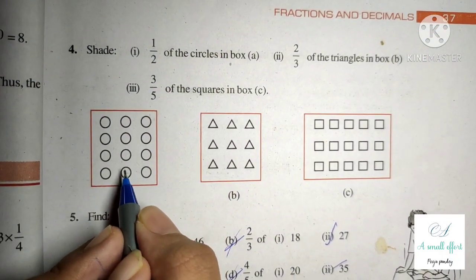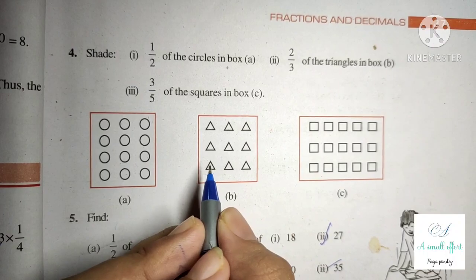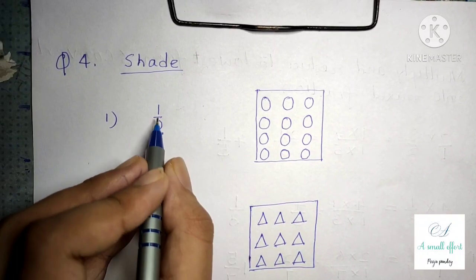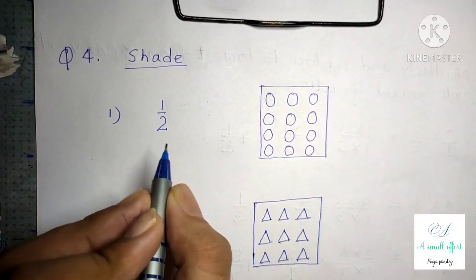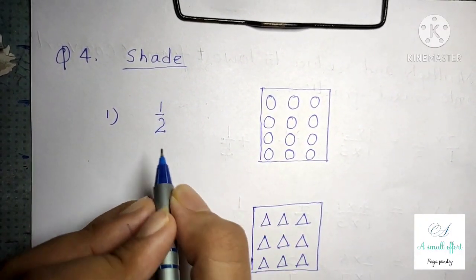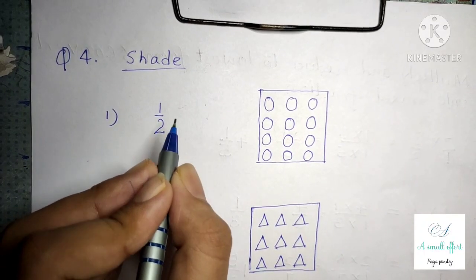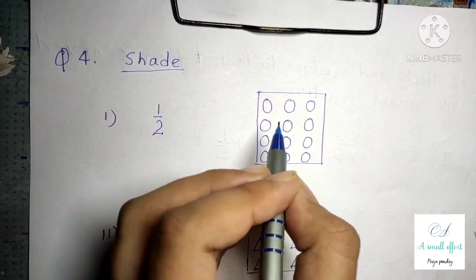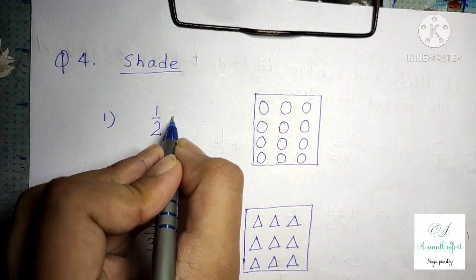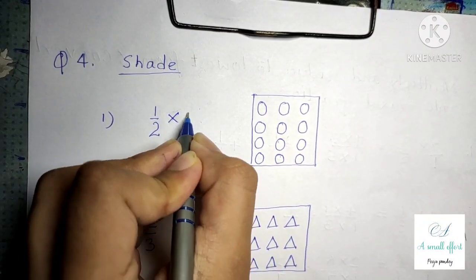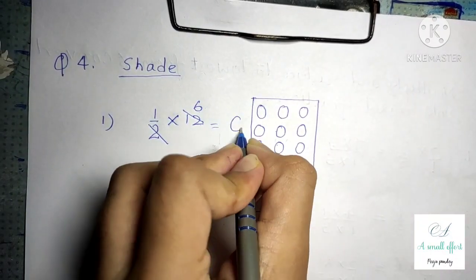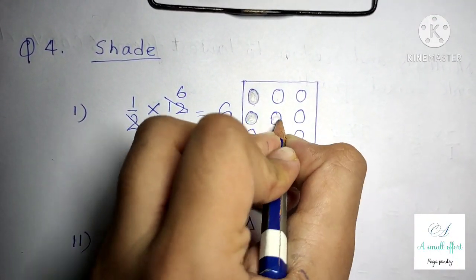Question number 4: we have to shade the shapes in the given boxes according to the given fraction. Part 1 is 1 by 2 of the given circles. To find how many circles to shade, we multiply 1 by 2 into the number of circles. There are 12 circles, so we multiply 1 by 2 into 12. In the 2 times table, 12 comes 6 times, so 1 into 6 is 6.